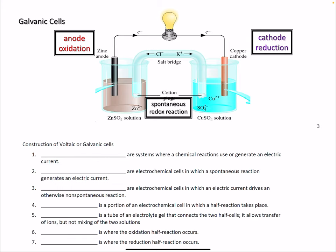So construction of voltaic or galvanic cells. Electrochemical cells are systems where chemical reactions use or generate an electric current.